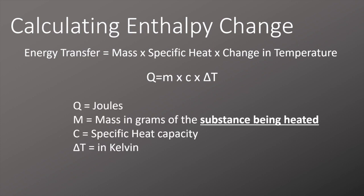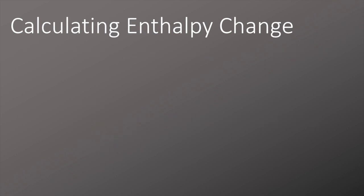Where Q is always measured in joules, m is the mass in grams of the substance being heated, so it's the mass in grams of the surroundings, c is the specific heat capacity which is 4.18, and delta T is measured in kelvin. Now we don't need to convert from degrees celsius on our thermometers to kelvin because the increment between one degree celsius and one degree kelvin is exactly the same. So now we've calculated energy transfer, we need to convert that into an enthalpy change.